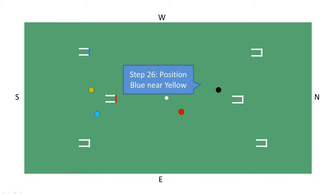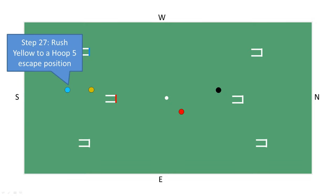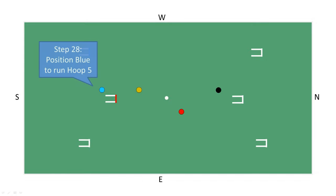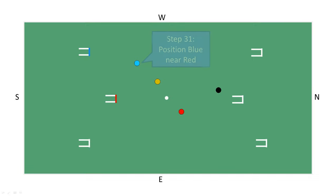With its two continuation strokes, blue now positions near yellow and then rushes yellow to an escape position at hoop 5. With the two continuation strokes it's now picked up, blue now positions in front of hoop 5 and then runs it. Blue now rushes yellow to a pivot position.